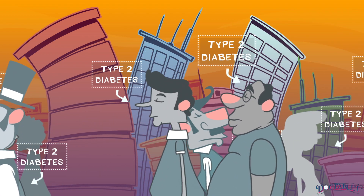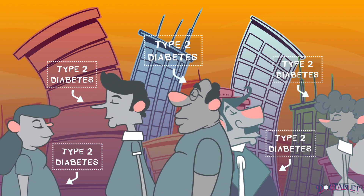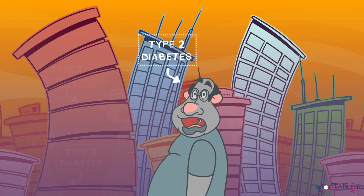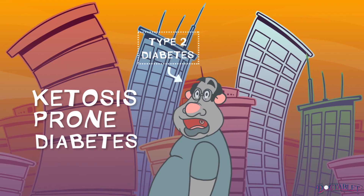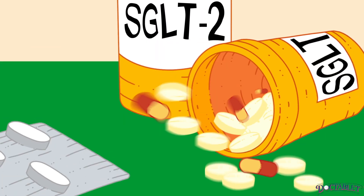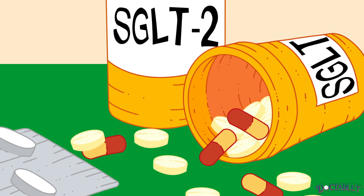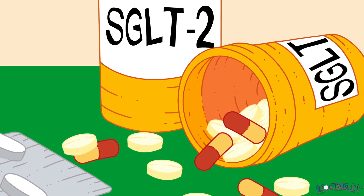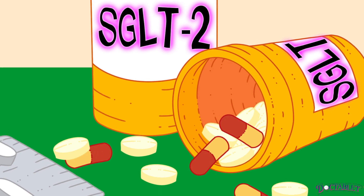But DKA can occur rarely in type 2 diabetes as well, particularly in conditions such as ketosis-prone diabetes or during the use of a specific class of oral medications used to treat diabetes called SGLT2 inhibitors.